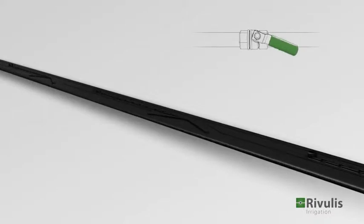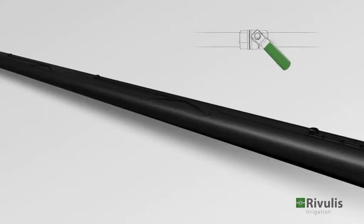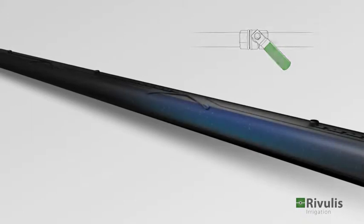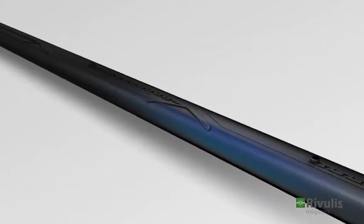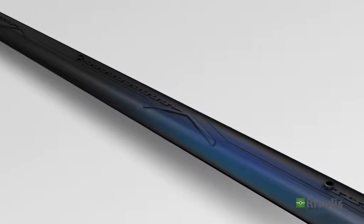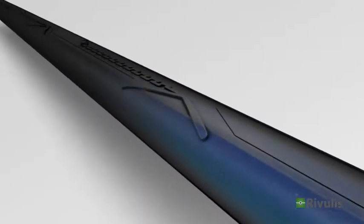The RODRIP drip tape provides a reliable and efficient irrigation solution for short or medium term crops. The flow path starts with the V-shaped inlets located at the top of the tape.